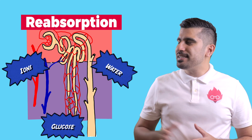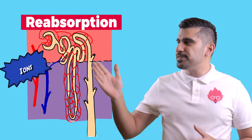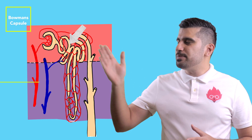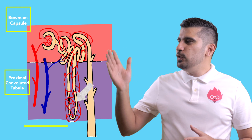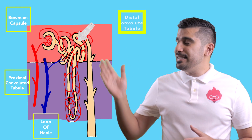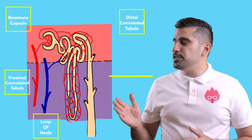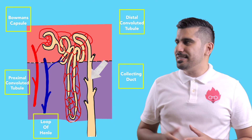The nephrons have five important regions: the Bowman's capsule, the proximal convoluted tubule, the loop of Henle, the distal convoluted tubule, and the collecting ducts.